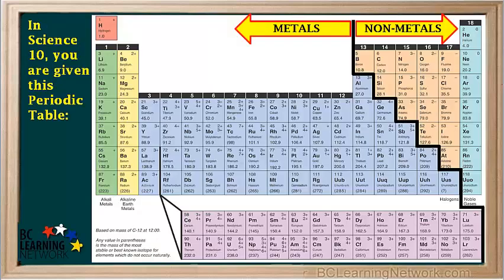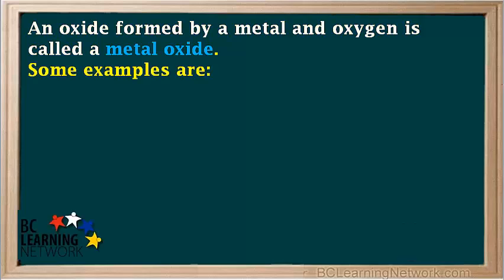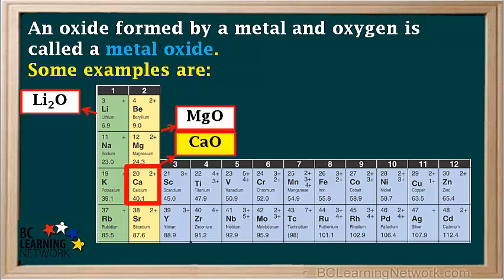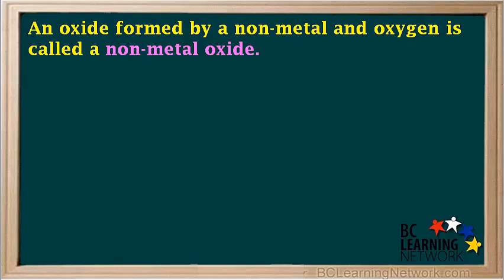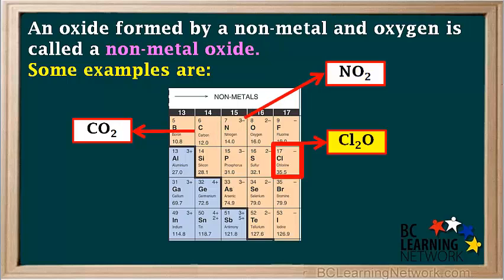Recall the periodic table and its staircase. Metals are on the left side of the staircase and nonmetals are on the right. An oxide formed by a metal and oxygen is called a metal oxide. Some examples are lithium oxide, magnesium oxide, and calcium oxide. An oxide formed by a nonmetal and oxygen is called a nonmetal oxide. Some examples are carbon dioxide, nitrogen dioxide, and dichlorine monoxide.